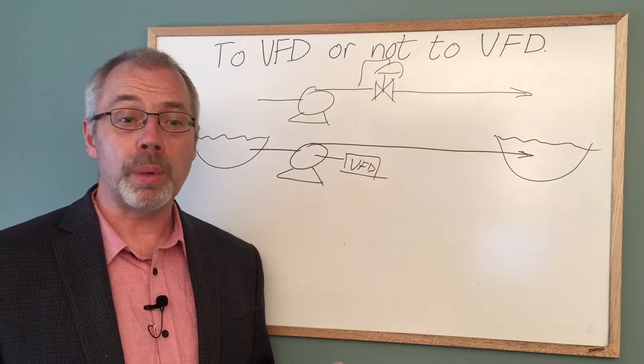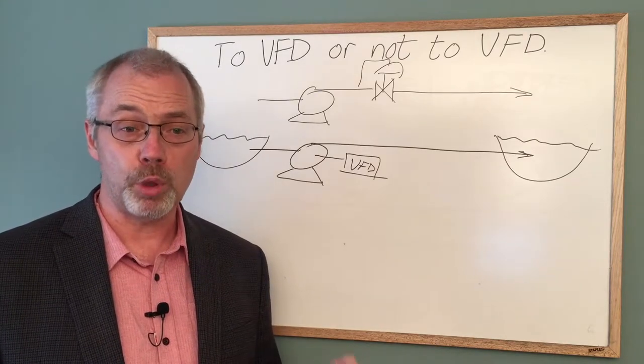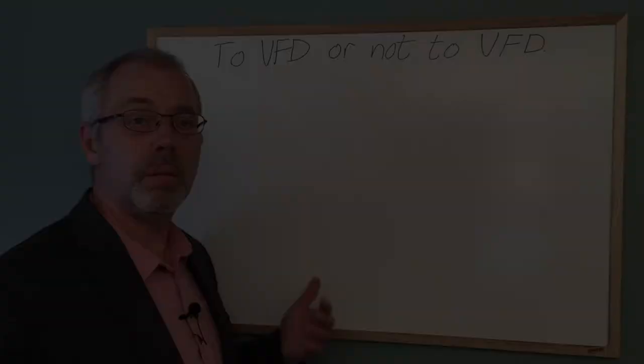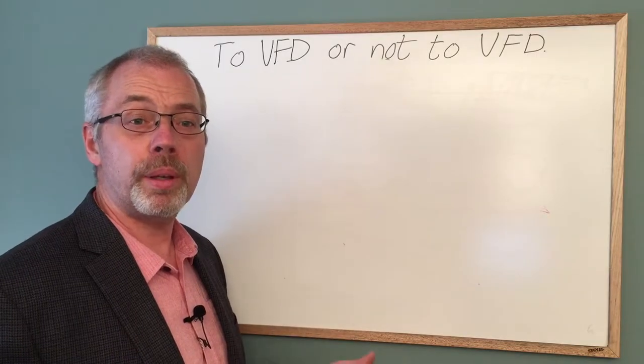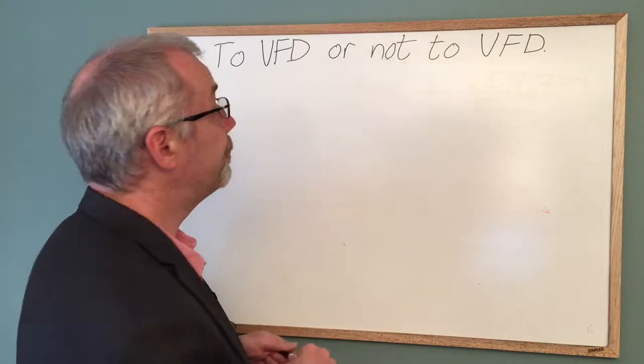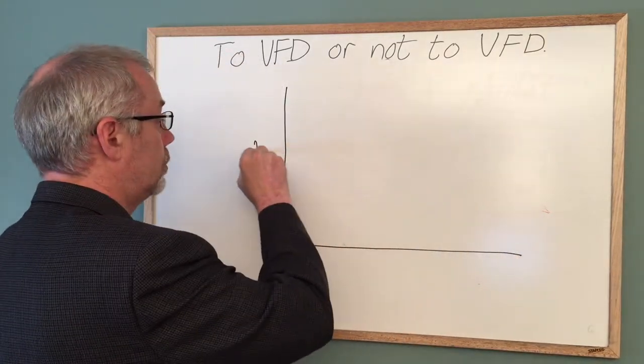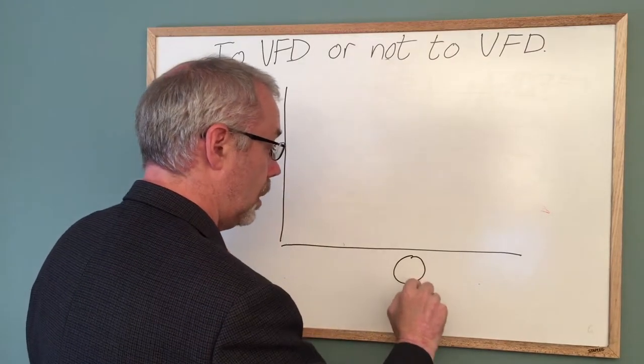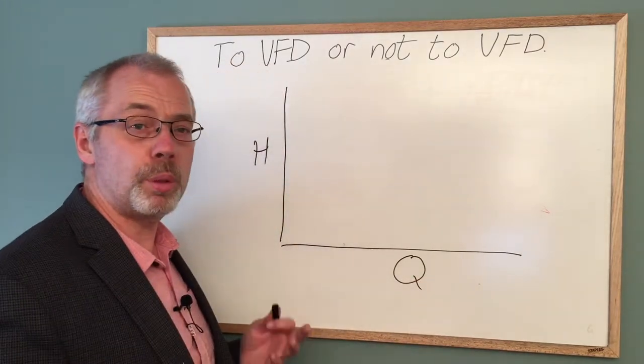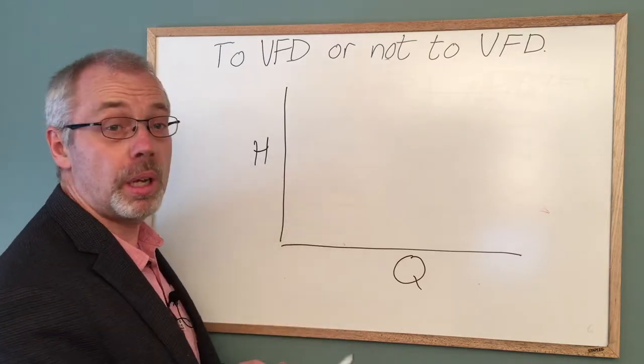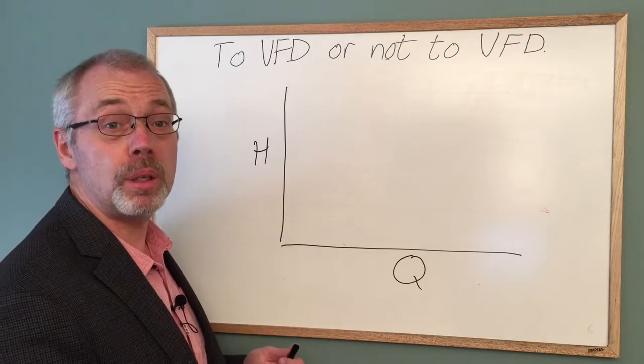Let's start by looking at how the behavior of a centrifugal pump changes when we change the pump speed. Let's look at a typical pump curve. The pump curve is the relationship between the pump discharge head, H, and the pump throughput or flow rate, Q.